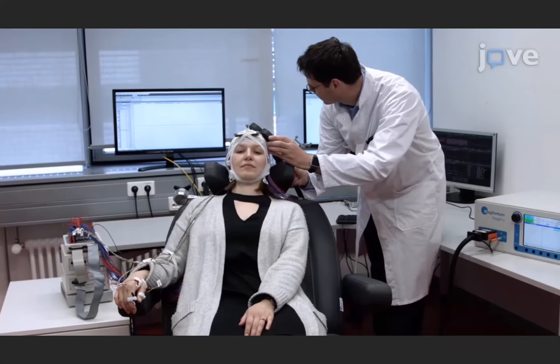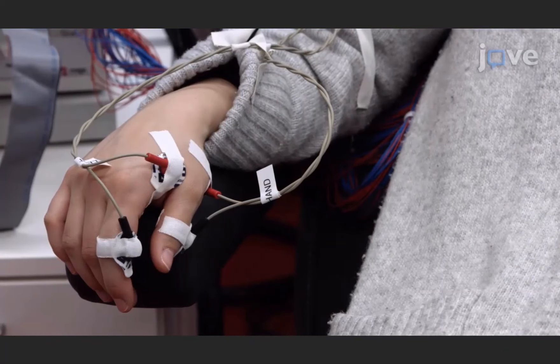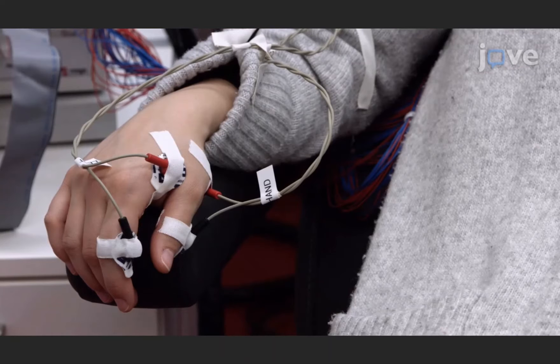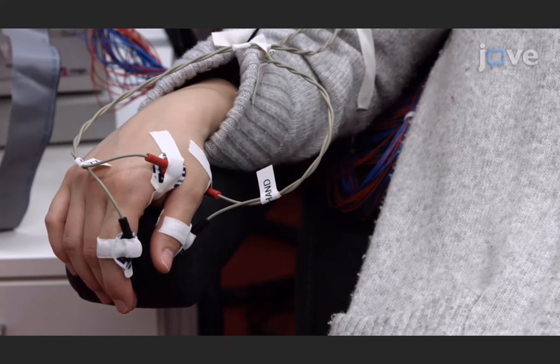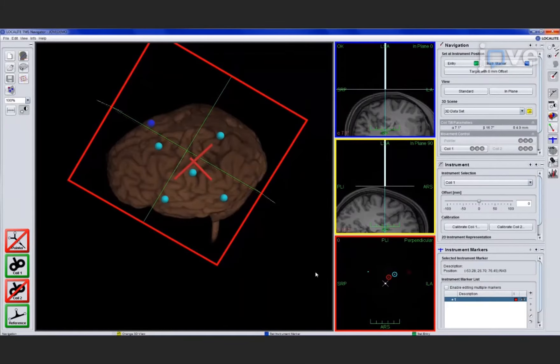To perform a real-time EEG-synchronized TMS experiment, first determine the exact location where TMS of the motor cortex evokes the strongest motor response from the hand muscles. Then mark this hotspot and coil position in the neural navigation software.